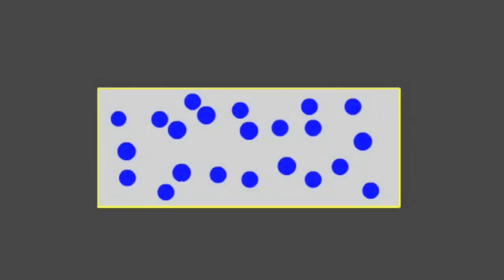An electric current results when charged particles move in one direction. The blue dots represent the charge carriers, of which electrons are the most common.